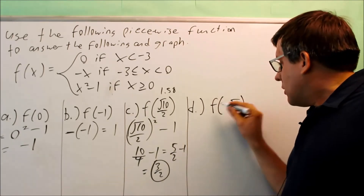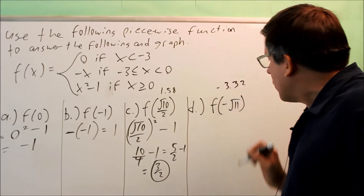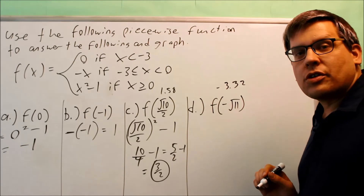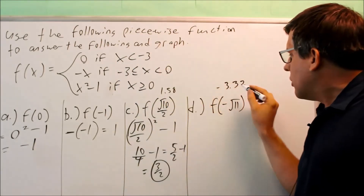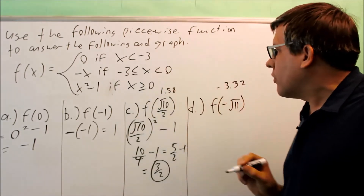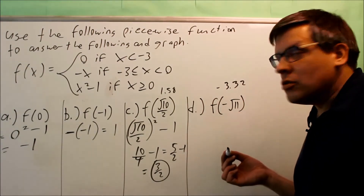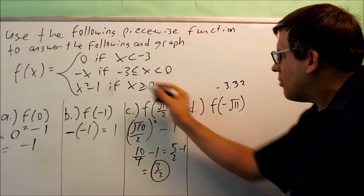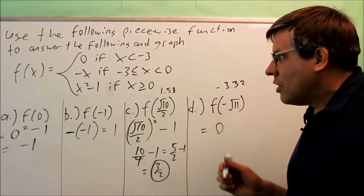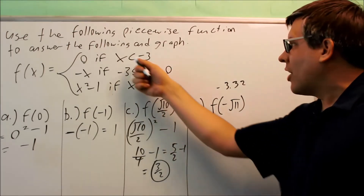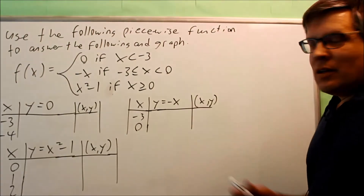For part d, we have f of negative square root of eleven. Using a calculator gives approximately negative 3.32. That fits the first condition — negative 3.32 is less than negative three. Since the first piece is just zero, there's nothing to plug the square root into. That means the answer is automatically zero. Whenever you get an x value less than negative three, the y value is zero.